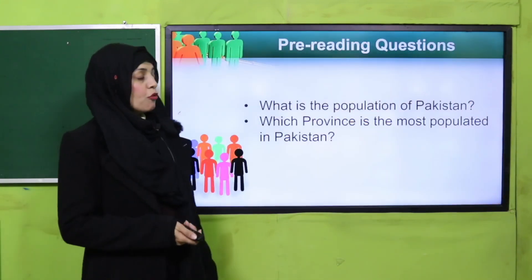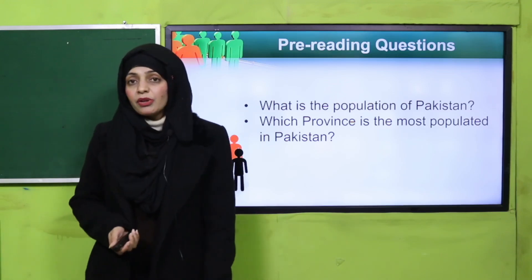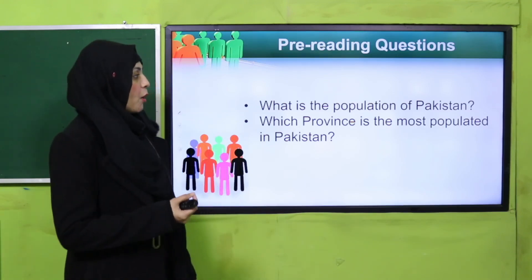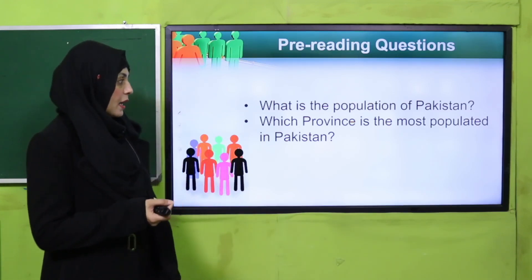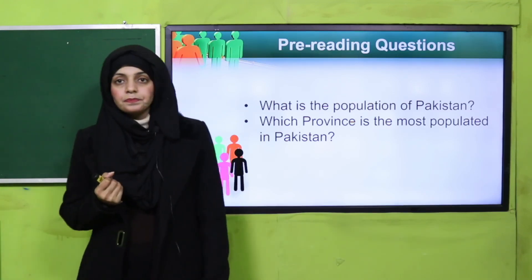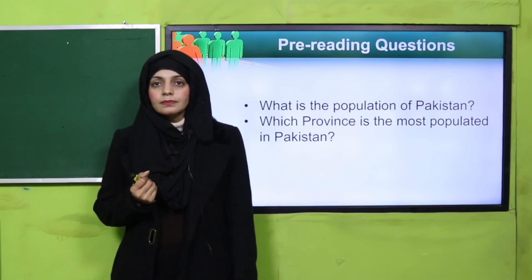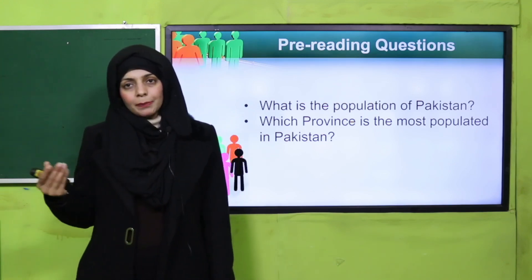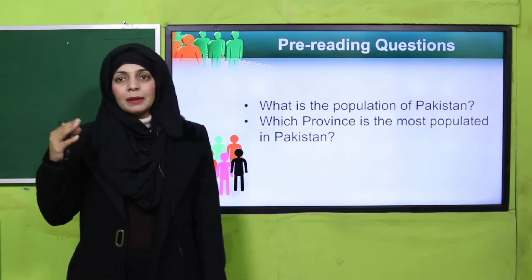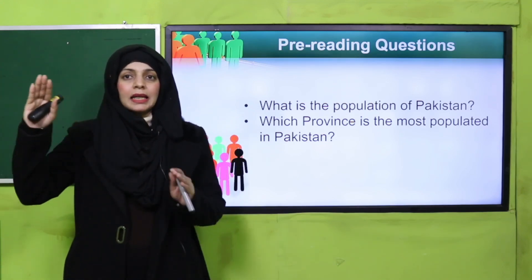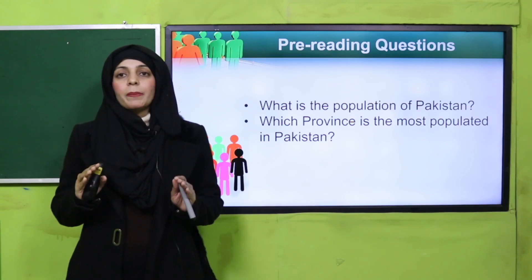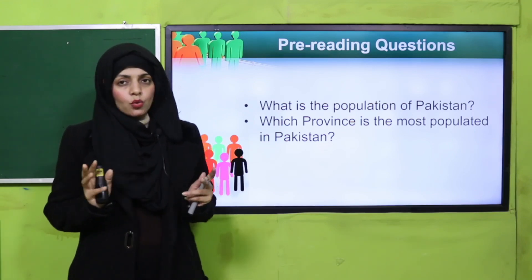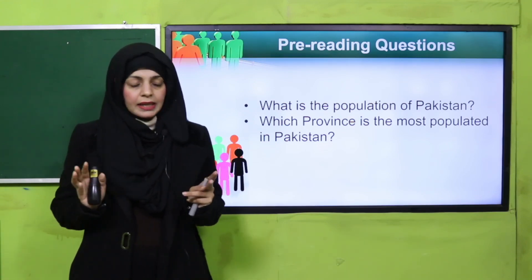Now let's quickly move forward towards the pre-reading question. Quickly tell me: what is the population of Pakistan? Takriban 22 se 23 crore ke darmiyan jo hai Pakistan ki abadi hai, according to the 2017 census.